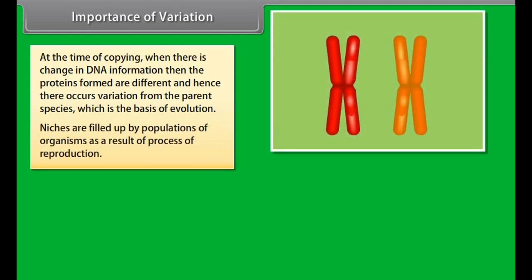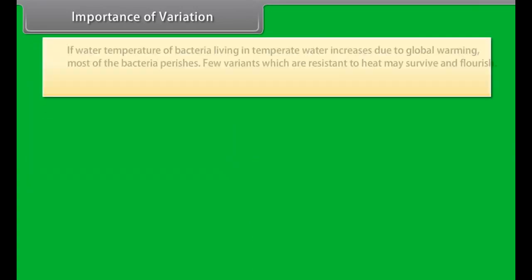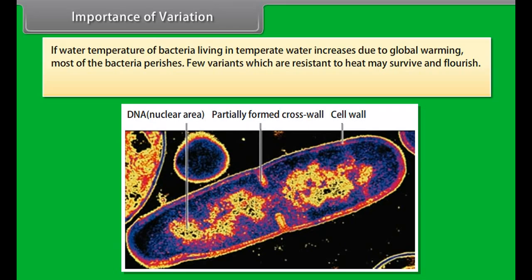Niches are filled up by populations of organisms as a result of the process of reproduction. Due to external factors like change in temperature, water level, meteorite hits, etc., there is a drastic change in the niche. As a result, the entire population may perish, but there are chances that a few individuals may survive. For example, if the water temperature of bacteria living in temperate water increases due to global warming, most of the bacteria perish, but few variants which are resistant to heat may survive and flourish.